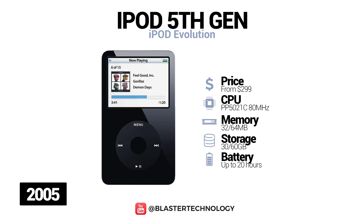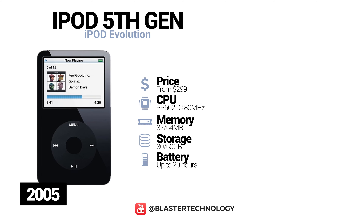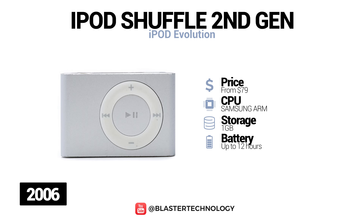The fifth generation iPod was launched in 2005, being the first iPod model to play videos, with a larger screen compared to other models. The second generation iPod Shuffle was launched in 2006 and was called the most profitable iPod of all time. It was square in shape and had a built-in clip. This generation also worked as a flash drive, like the first iPod Shuffle, but did not have a built-in USB connector, requiring a docking station to connect to a computer.